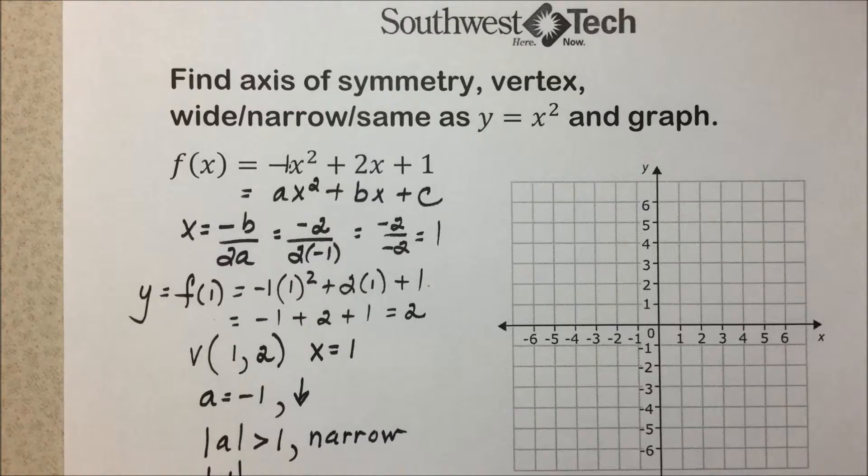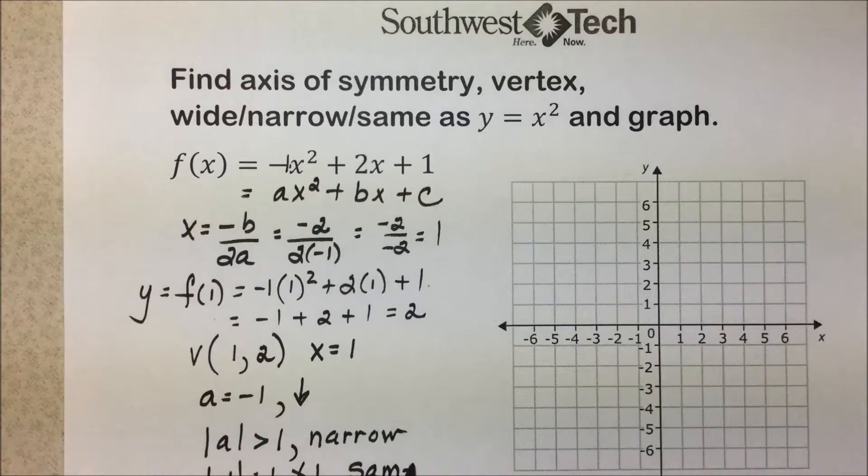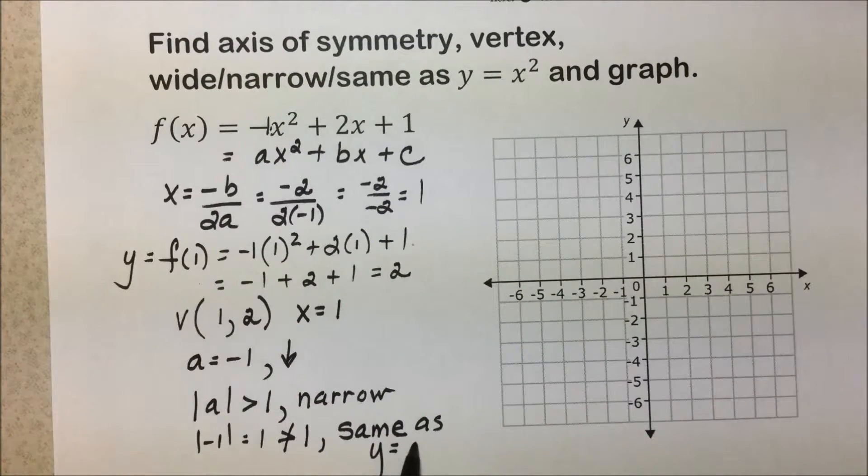Well when we plug in a -1, the absolute value of -1 is 1. That is not greater than 1. It's equal to 1, which means it's going to be the same shape as the y = x² form.